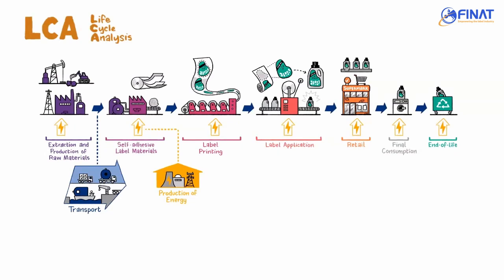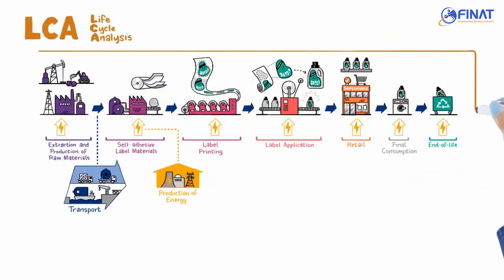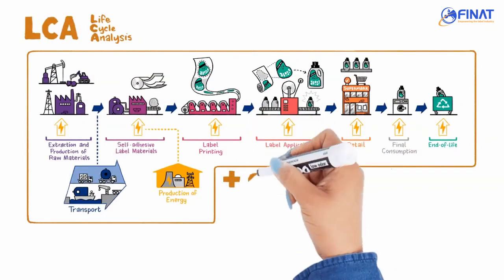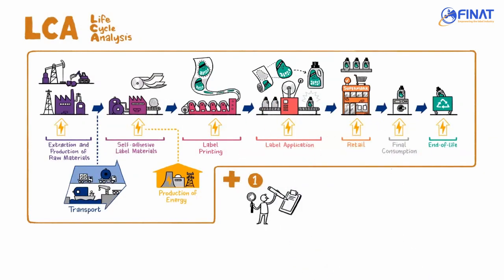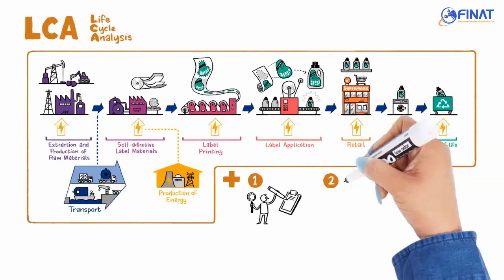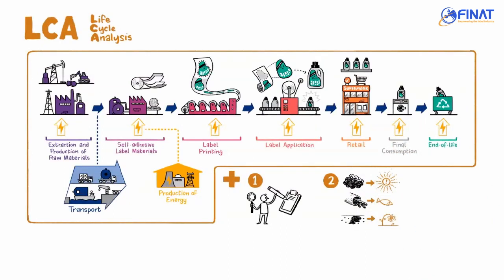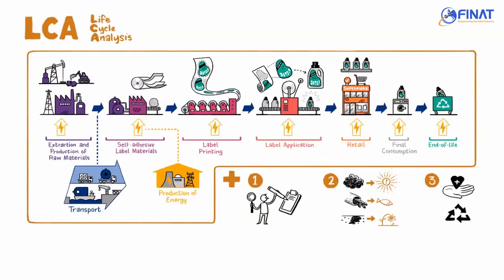The key elements of Life Cycle Analysis are: 1. Identify and quantify the environmental loads involved — these can include the energy and raw materials consumed, and the emissions and wastes generated. 2. Evaluate the potential environmental impacts of these loads. 3. Assess the options available for reducing these environmental impacts.